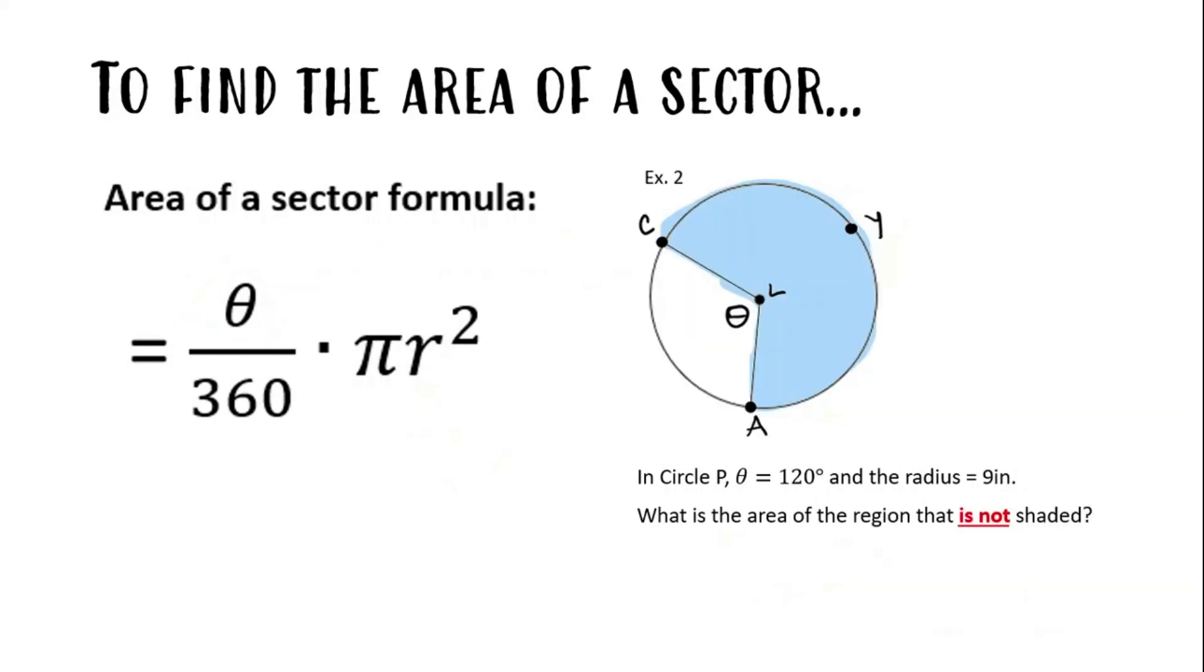Let's try another example. Some reminders: this guy to the left is the formula to find the area of a sector, and that symbol represents the angle measure in degrees of the sector. It has to be in degrees for us to use this formula.